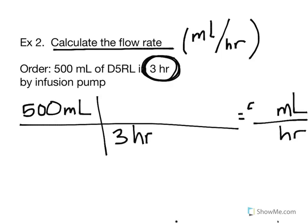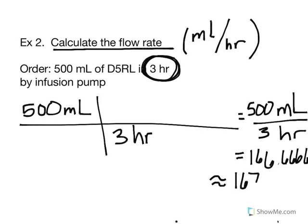I'm going to multiply across the top, multiply across the bottom, and divide my final results. The answer I get here isn't so nice: 166.6666 repeating forever. So we're going to end up rounding this to 167 milliliters per hour.